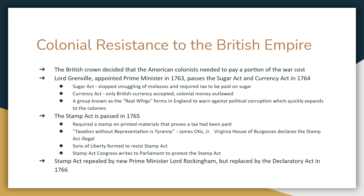The Stamp Act was repealed in 1766, but it was replaced by something called the Declaratory Act. In the Declaratory Act, it was decreed that Parliament has the authority to tax and legislate the British colonies in North America in whatever way it wants to. This didn't receive much attention because everybody was celebrating the repeal of the Stamp Act, but the new Prime Minister, Lord Rockingham, was really thumbing his nose at the colonists without them realizing it.